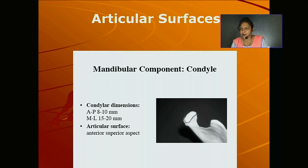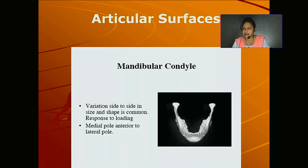The second component is the mandibular component, formed by the condyle — also known as the rounded head of the mandible. The condyle dimensions are 8 to 10 mm anteroposteriorly and 15 to 20 mm medial to lateral. Articulation occurs at the anterior superior aspect of the condylar surface. Variation in size and shape of the mandibular condyle is common, and the medial pole is anterior to the lateral pole.